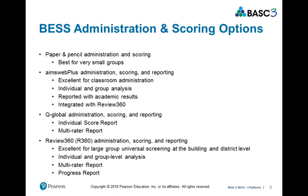There are several different options for BESS administration and scoring. The paper and pencil option is best for very small groups. AIMSweb administration scoring reporting is excellent for classroom administration — individual and group analysis can be reported alongside academic results and is integrated with Review360. The Q-Global administration and scoring reporting provides more detailed individual score reports and multi-rater reports. Review360 is excellent for large groups and universal screening at the building and district level, with individual and group level analysis including student groups by ethnicity and gender, multiple rater reports, and a progress report.